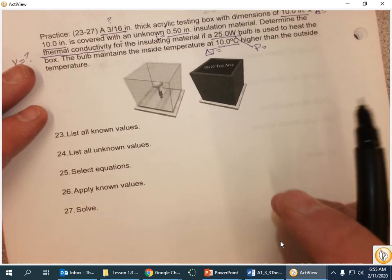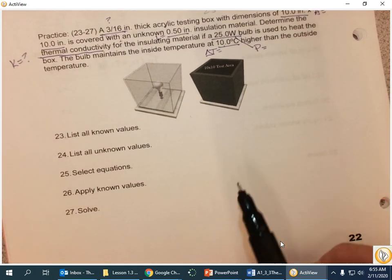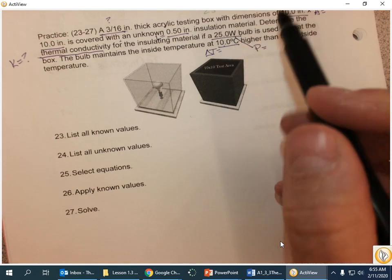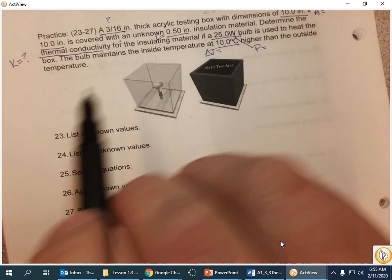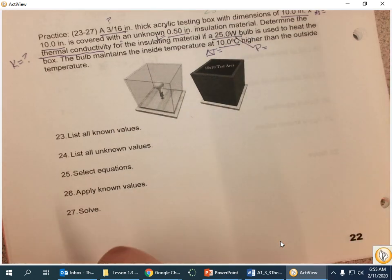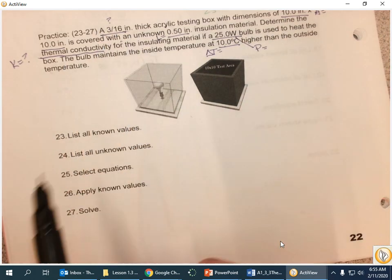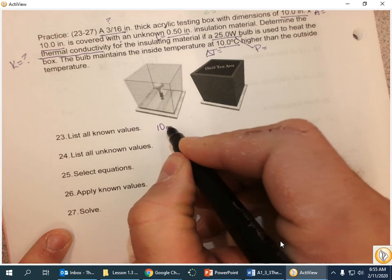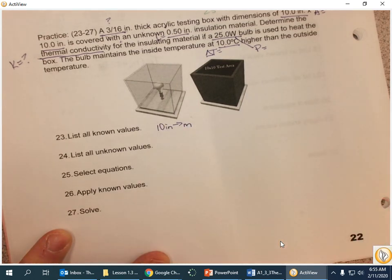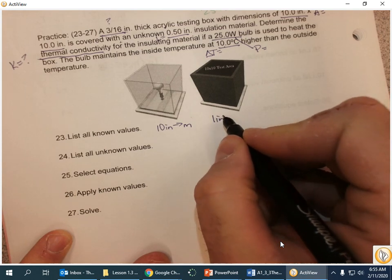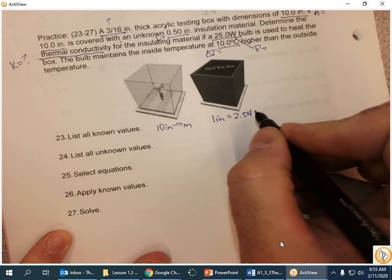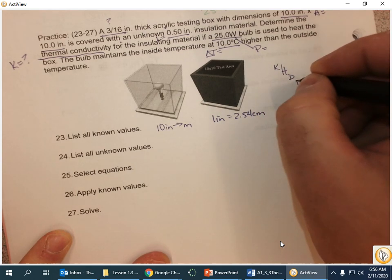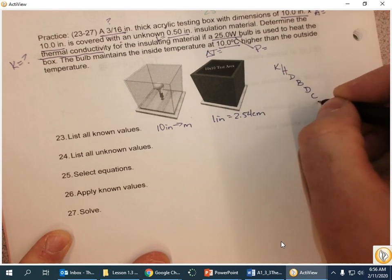So, known values. Well, one of the issues here is that I know watts is work over time, right? And work is in Newton meters, so that means that I've got to do some conversions. I've got to convert 10 inches into meters, and I know that 1 inch is 2.54 centimeters, and King Henry died by drinking chocolate milk.